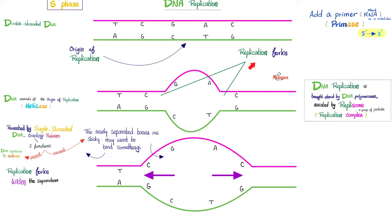The first order of business: add a primer — a short RNA segment of about 10 nucleotides. Primase makes this primer. In which direction? 5-prime to 3-prime, just like how DNA polymerase works.